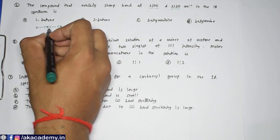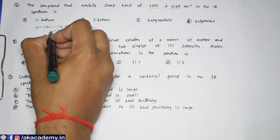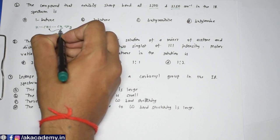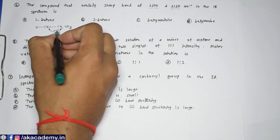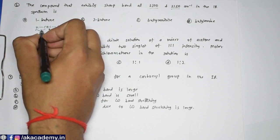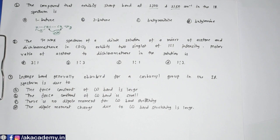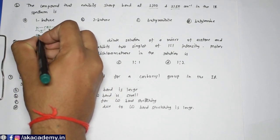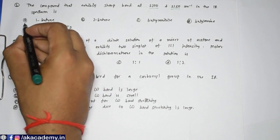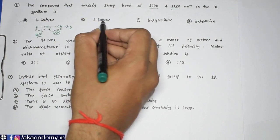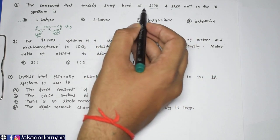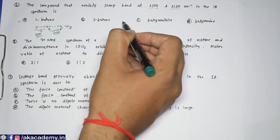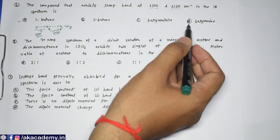The C≡C triple bond and the CH₂ bond give absorption in the range of around 2150 cm⁻¹, and this terminal alkyne gives IR absorption in the range of 3300 cm⁻¹. So the first option will be correct — no need to go to the second, third, or fourth options. If you work out the IR data you can relate to options B, C, and D.